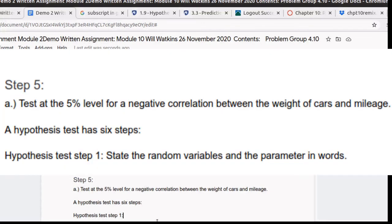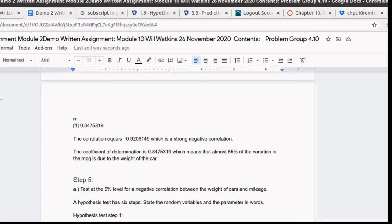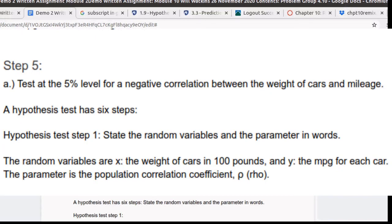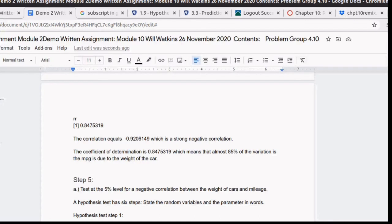So there's two random variables. One is the x, the weight of cars in 100 pounds. And the second one is y, the miles per gallon of each car. The parameter that we're trying to understand is the population correlation. The symbol that we use for that is rho. So we've done hypothesis step one. Now we need to do the hypothesis step two up through hypothesis step six.